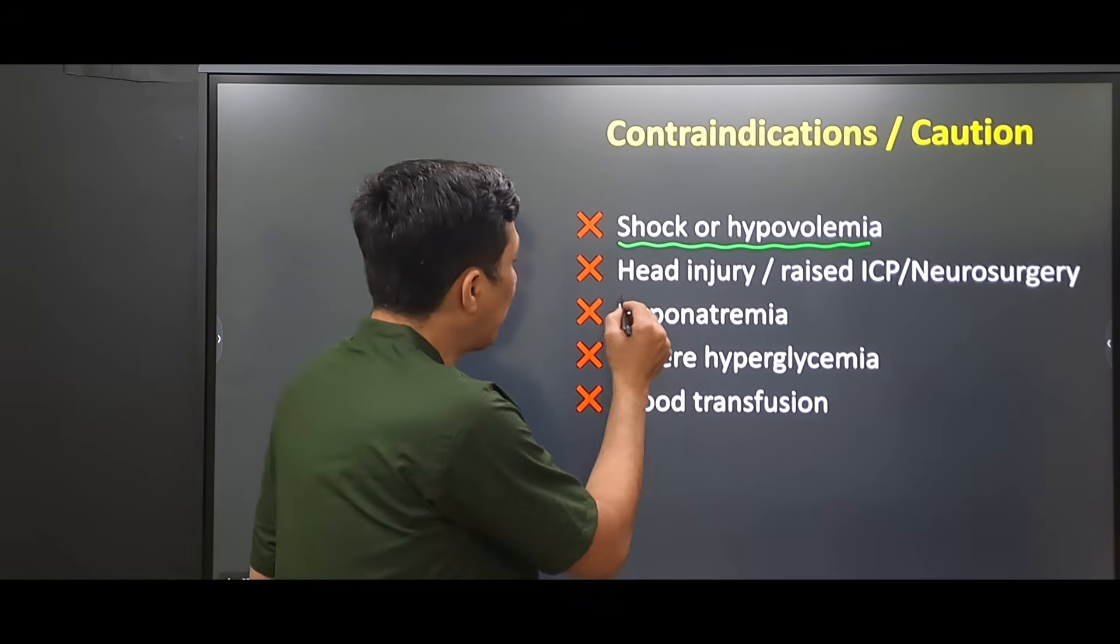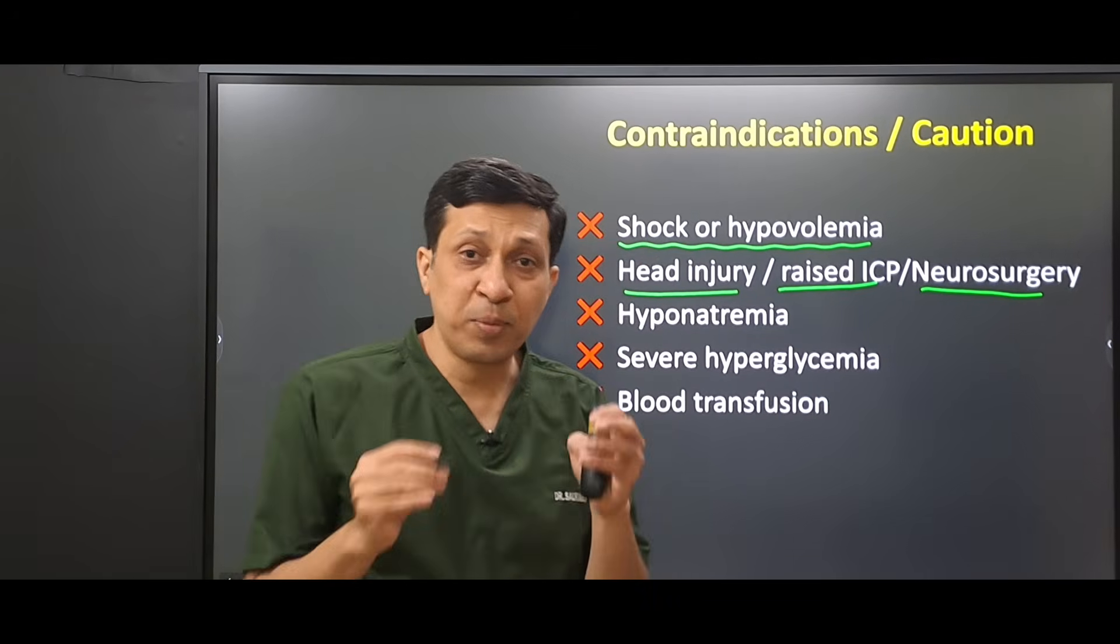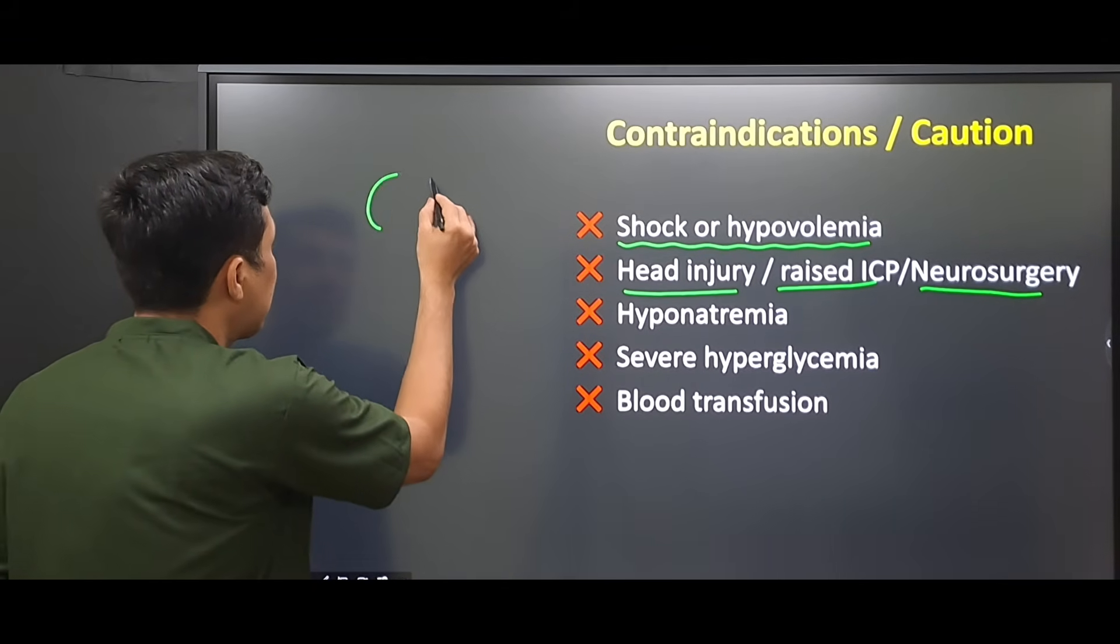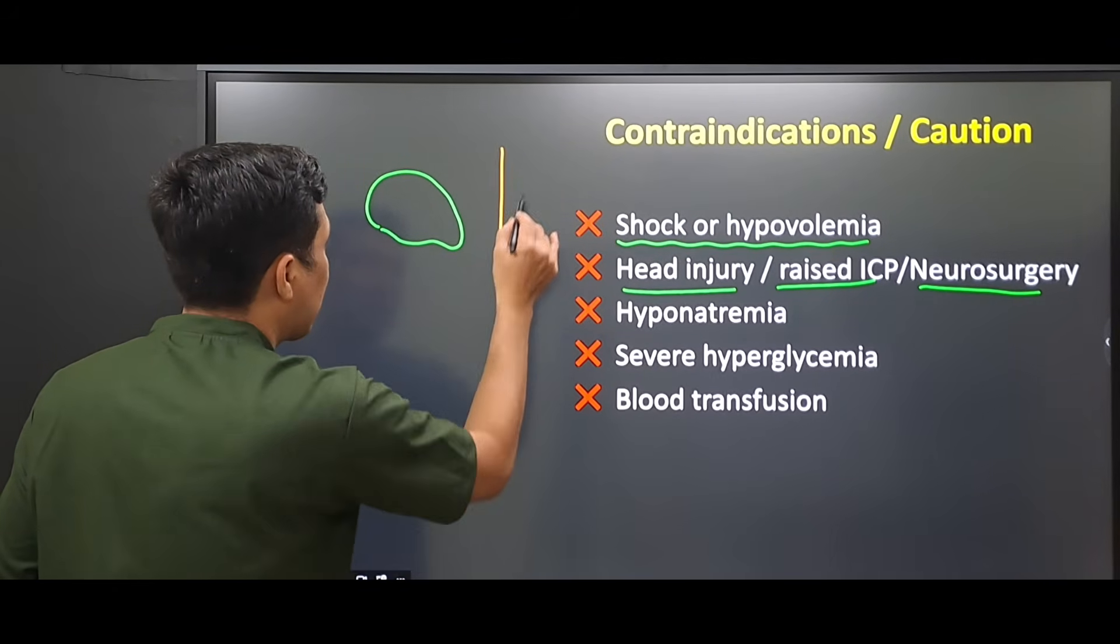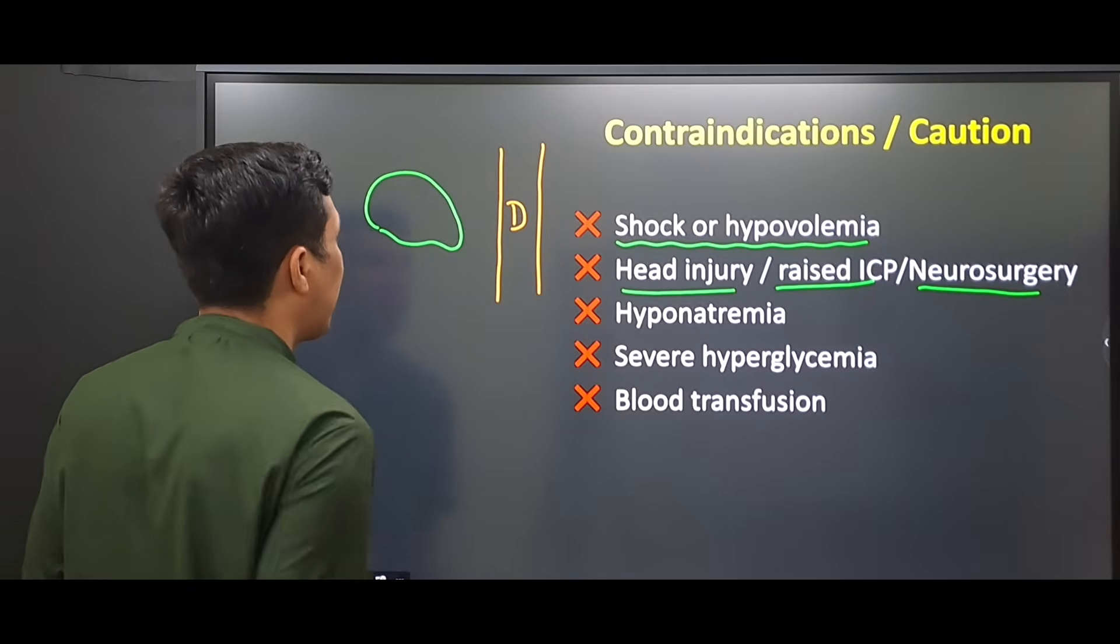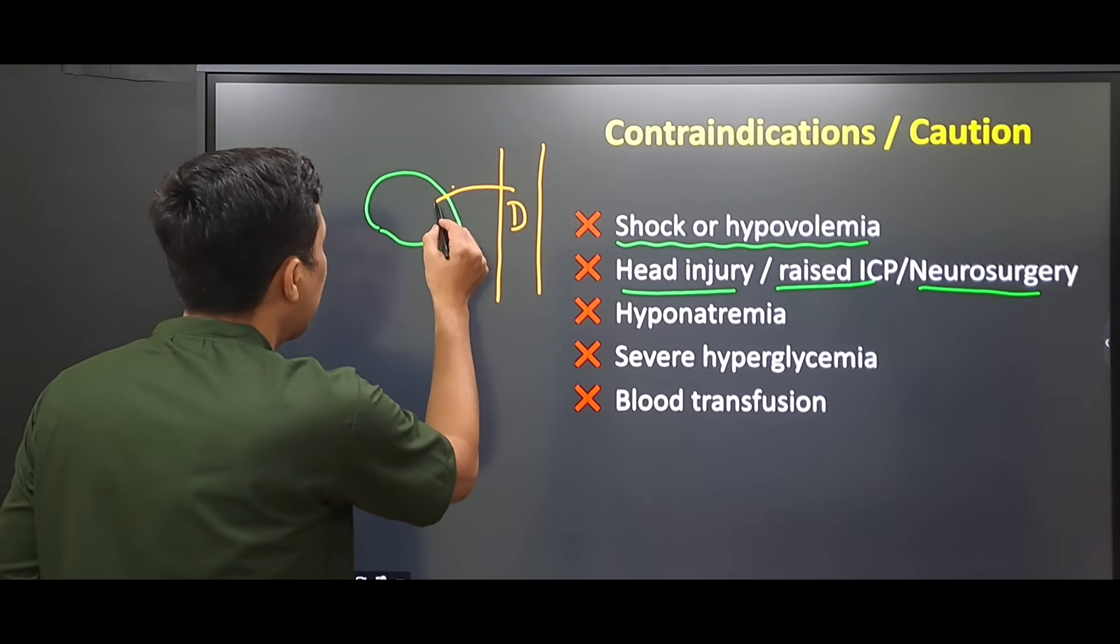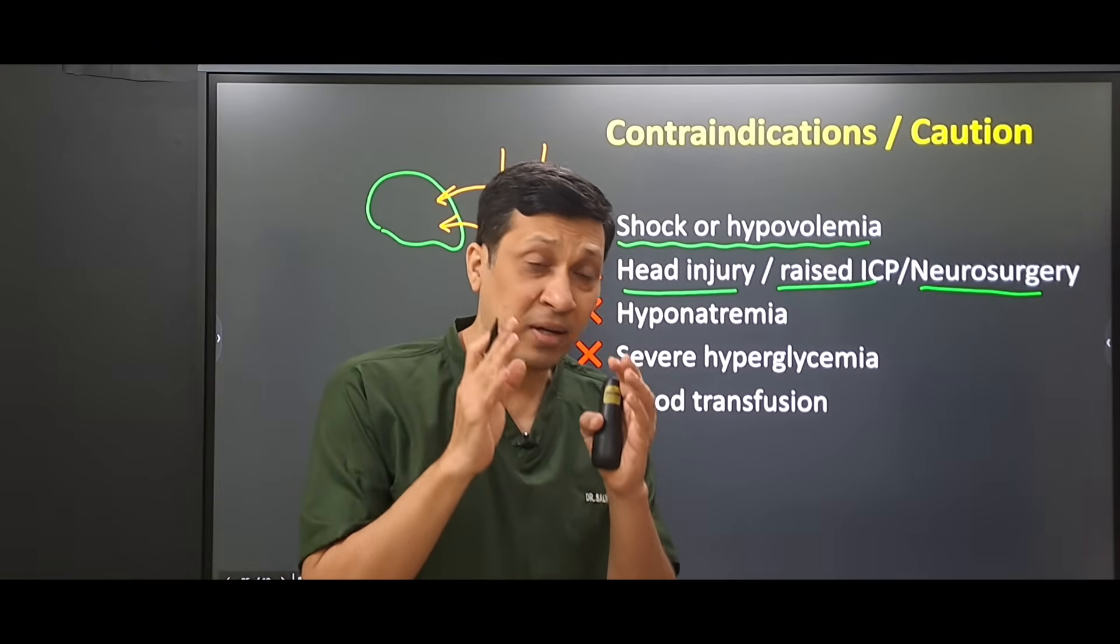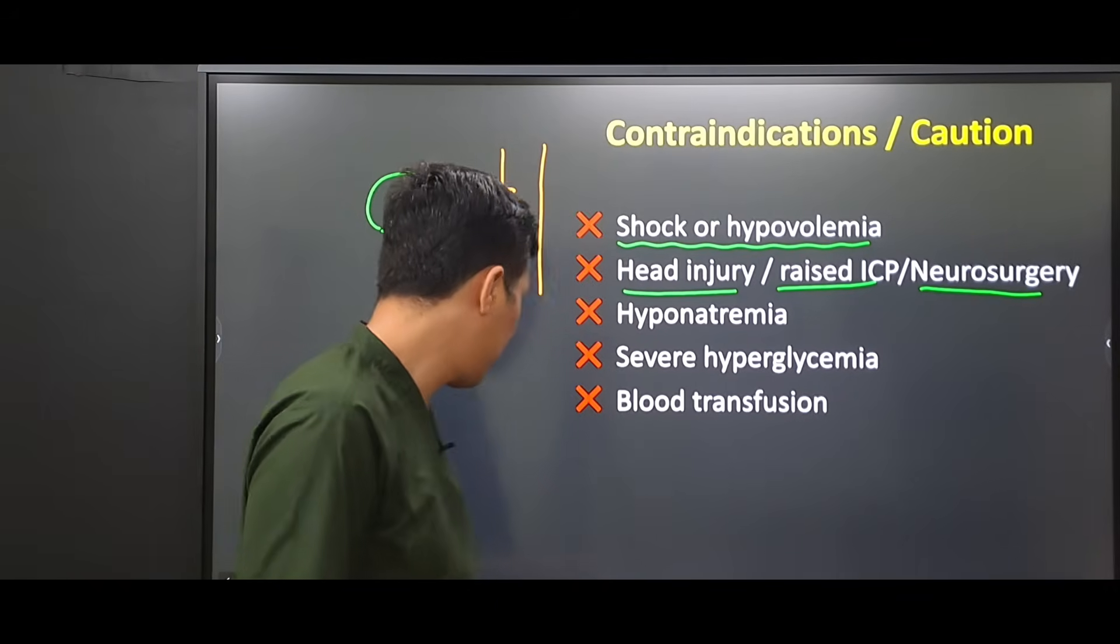It is also not useful in head injury, raised intracranial pressure, or neurosurgery. This is because it is a hypotonic fluid. For example, this is the brain and this is the blood vessel. When you give dextrose 5%, it is a hypotonic fluid, so all this fluid will ultimately get into the brain and it will cause cerebral edema. That is the reason it is not used in head injury, raised intracranial pressure, or neurosurgery.